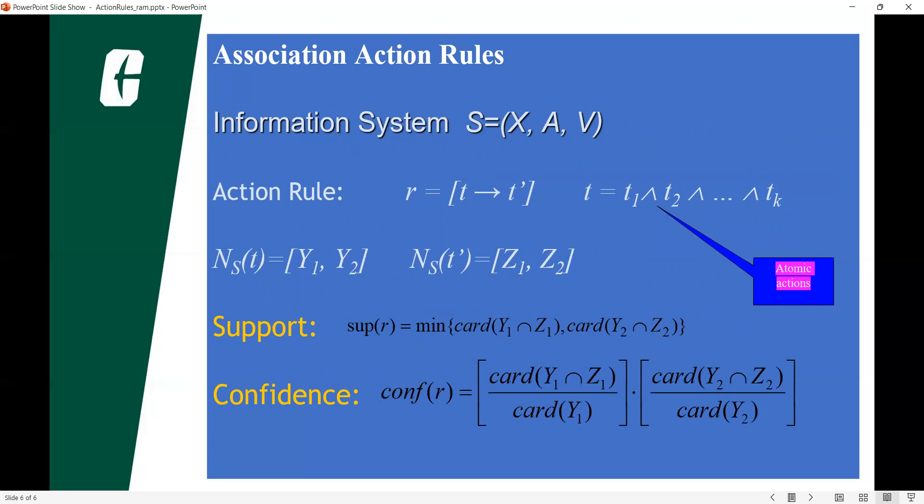Support of r is equal to minimum of, we have intersections of two. One is Y1 intersection Z1 and Y2 intersection Z2. We can take minimum of them as support. When it comes to confidence, we can take Y1 intersection Z1 by Y1 into Y2 intersection Z2 by Y2. We can take it as confidence.